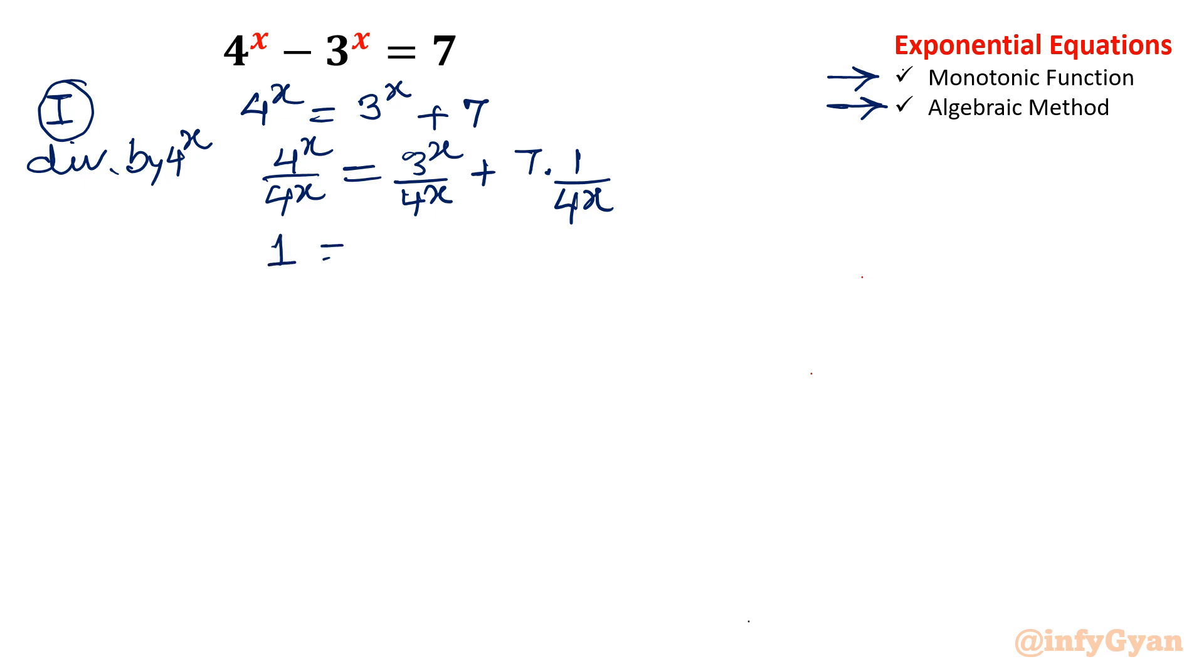So left side will become 1. Right side, see how. This is simple 3 power x over 4 power x. Because your exponent is same, we will merge it base. And 1 over 4 power x I will write 1 power x over 4 power x. Otherwise also you can write 4 raise to the power minus x. So let me write 3 over 4 whole power x plus 7 times 1 over 4 whole power x.